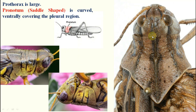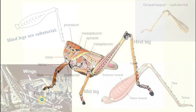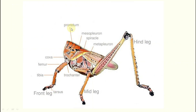The prothorax is large. The pronotum is saddle-shaped and ventrally covers the pleural region. The hind legs are saltatorial for jumping; the fore and mid legs are ambulatorial for walking. From each thoracic segment — prothorax, mesothorax, metathorax — one pair of legs arises.